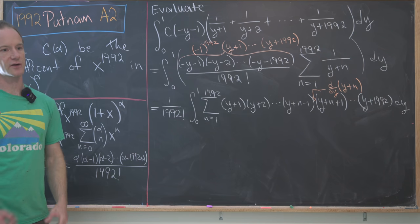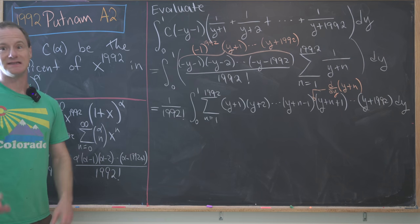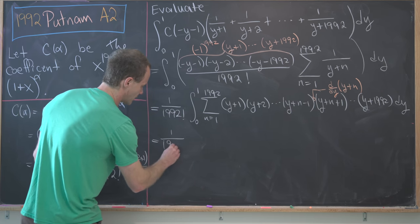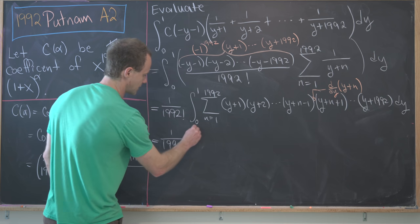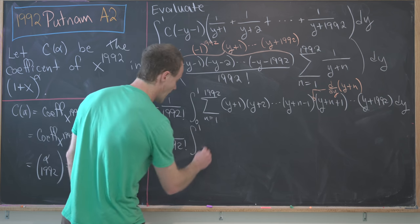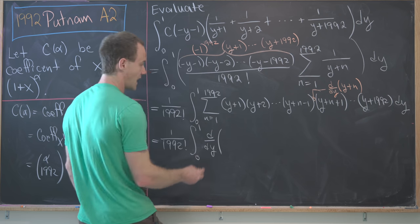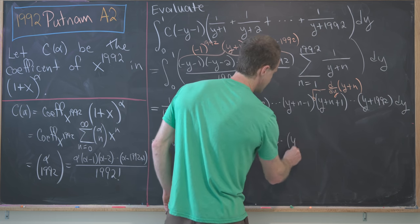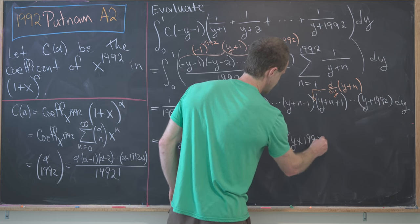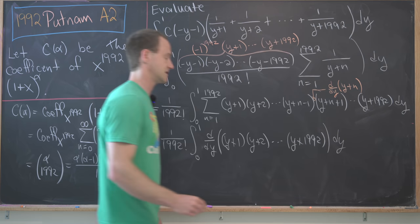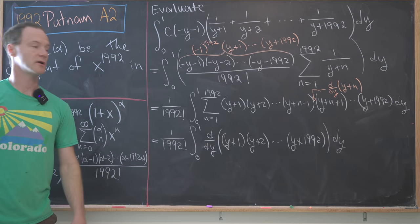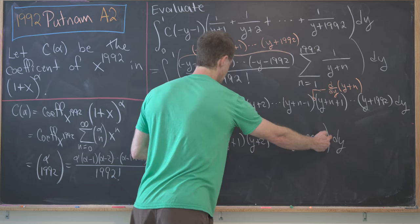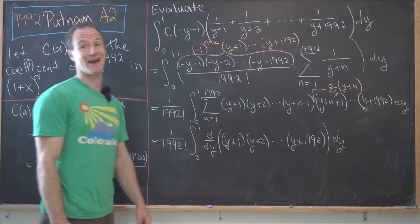That means I can rewrite this as 1/(1992!) times the integral from 0 to 1 of the derivative with respect to y of (y+1)(y+2)...(y+1992), where I no longer need the sum and I no longer need to leave anything out because the product rule takes us from here to here just as we'd like.